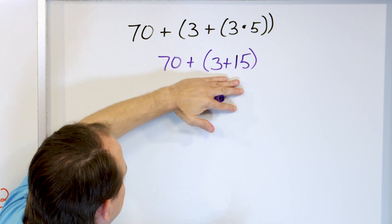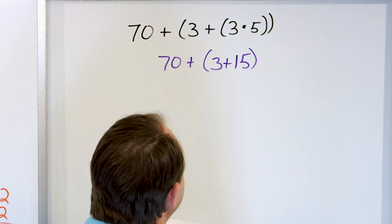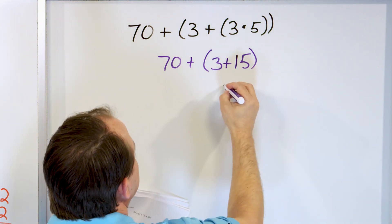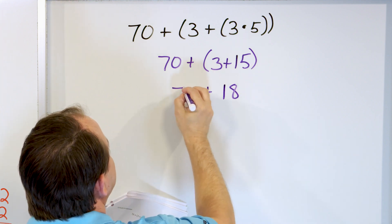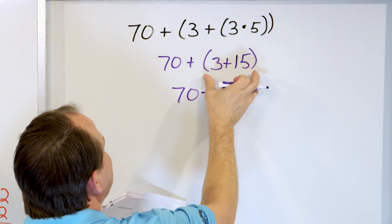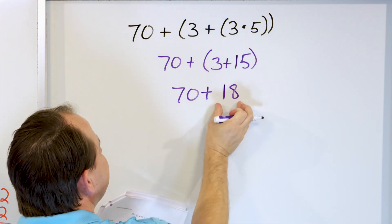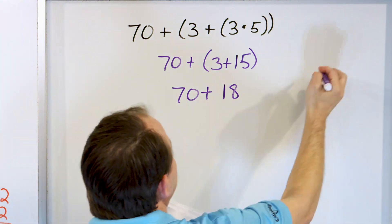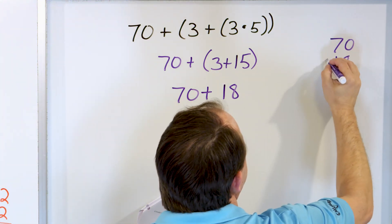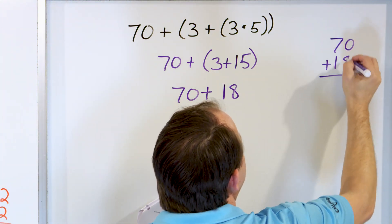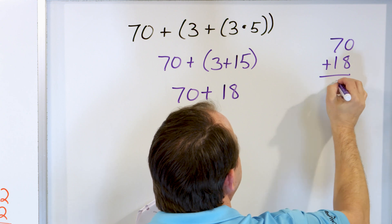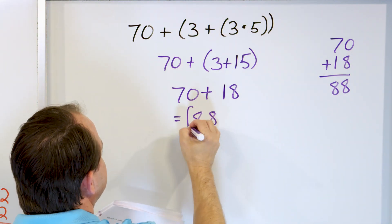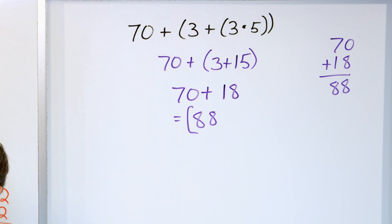Now at this step I do the parentheses again. 3 plus 15 is going to be 18, and then I still have to add 70. I can drop the parentheses after I do the calculation. So what is 70 plus 18? We have an 8 and an 8, so the answer is 88. 88 is the final answer.